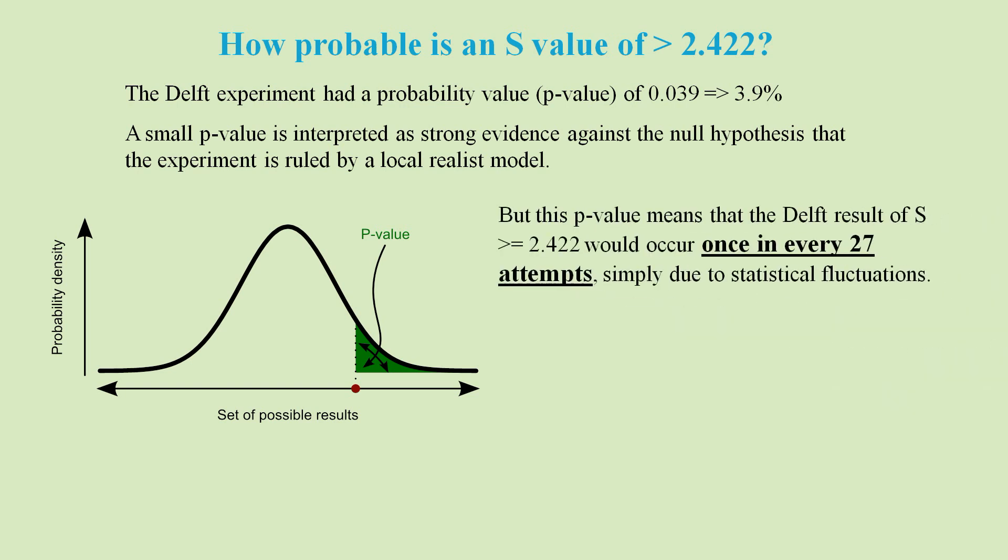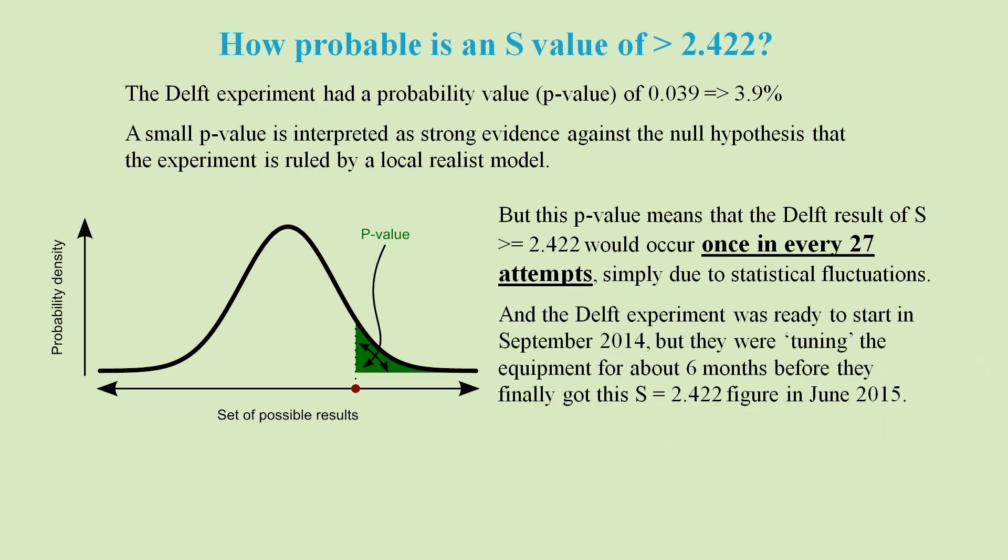This figure means that we could get a value of greater than or equal to 2.422 once in every 27 attempts. When you consider that they were tuning and tinkering for six months before they managed to get this result, it suddenly sounds less impressive.